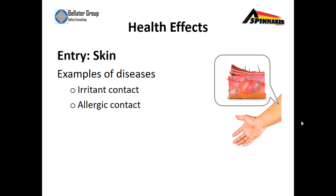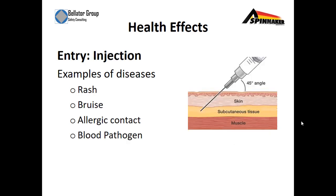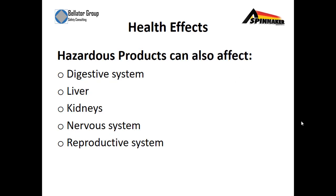Entries into our skin: examples of diseases include irritants and allergic contacts. Entries from injections can include rashes, bruises, allergic contacts, or blood pathogens. Hazardous products can also affect our digestive system, liver, kidneys, nervous system, and reproductive system. That's why it's always important that we understand the chemicals we're using so we can better protect ourselves from these hazards.